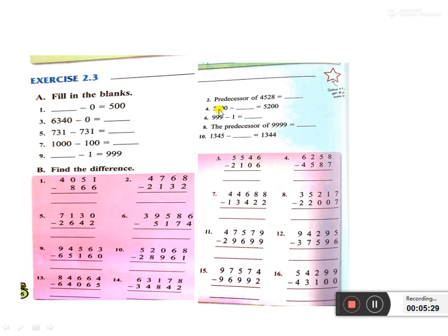Question 4: 5200 minus blank equals 5200. The answer is 0. Question 5: 731 minus 731. When you subtract the same number, the answer is 0. Question 6: 999 minus 1. In the ones place, 9 minus 1 is 8. Answer is 998.